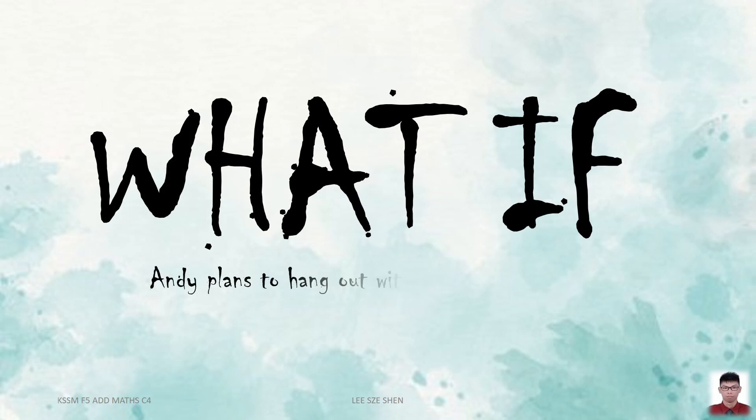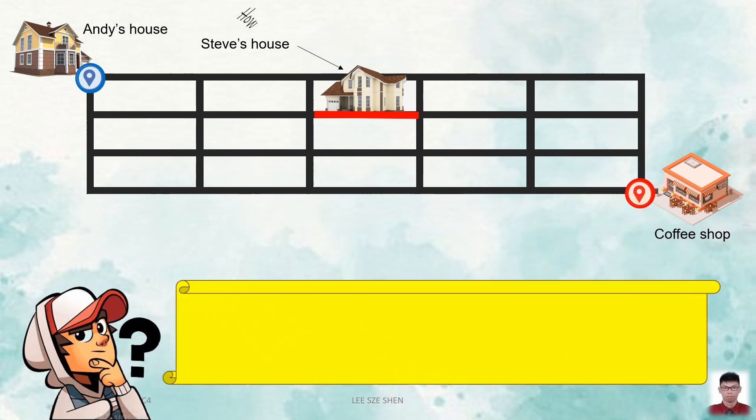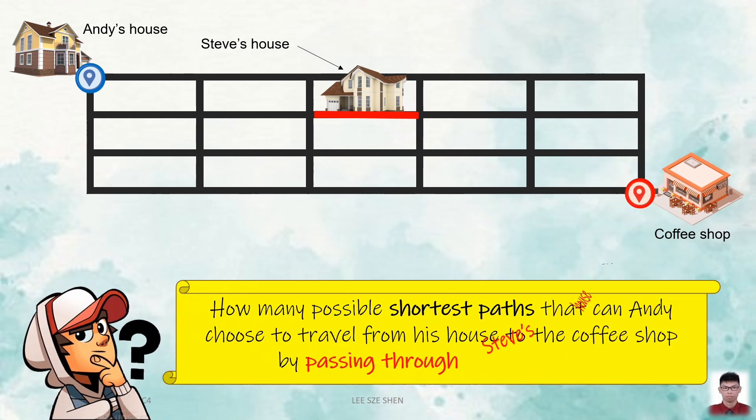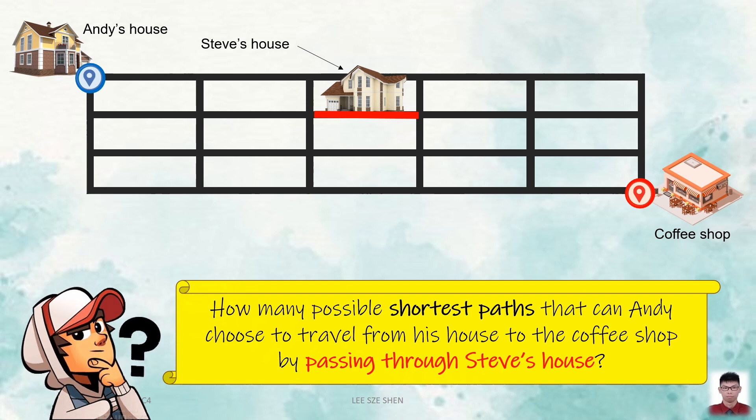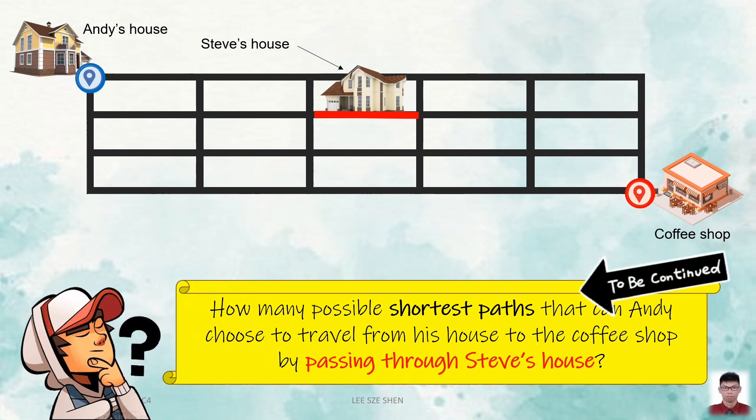I have another interesting problem here. Is Andy going to the coffee shop alone? Nah, he will feel so lonely. So what if Andy plans to hang out with his friend, Steve? If Andy plans to fetch Steve by passing through the front road of Steve's house and then just go to the coffee shop together, then how many possible shortest paths can Andy choose? Can you try to solve this by your own? We will discuss this in my next video. So please stay tuned and have a nice day! Goodbye!